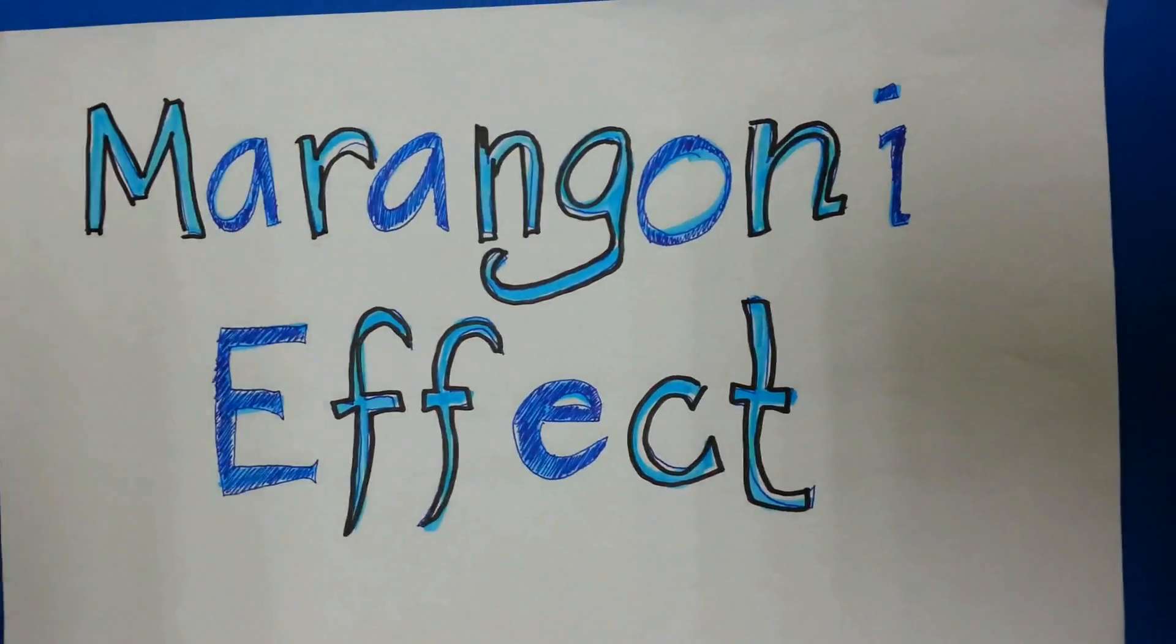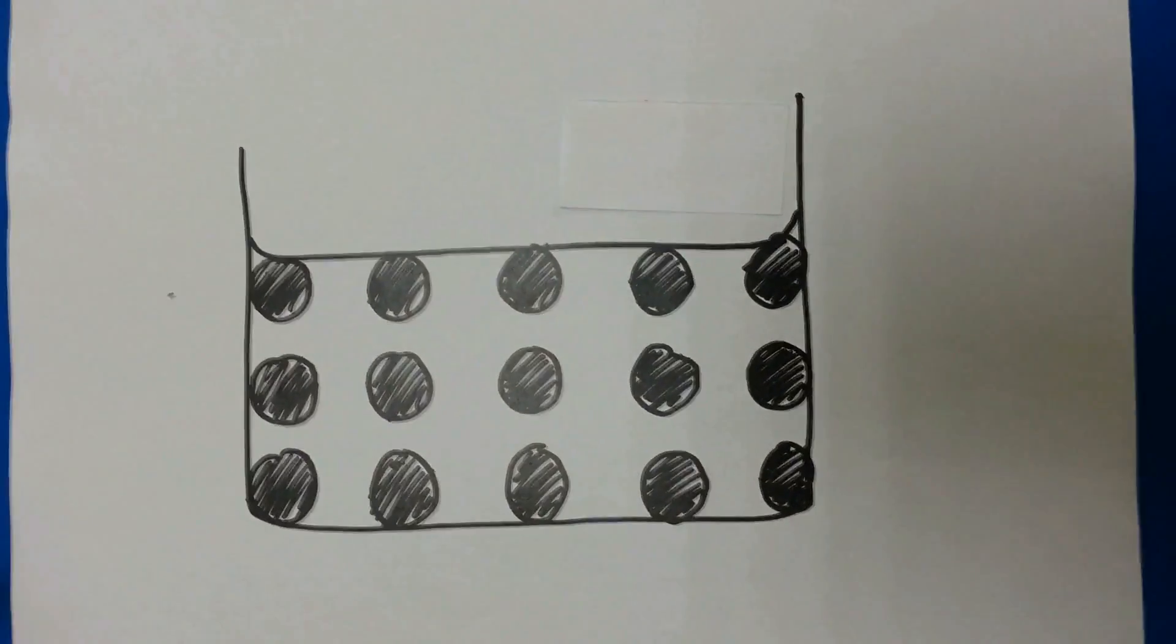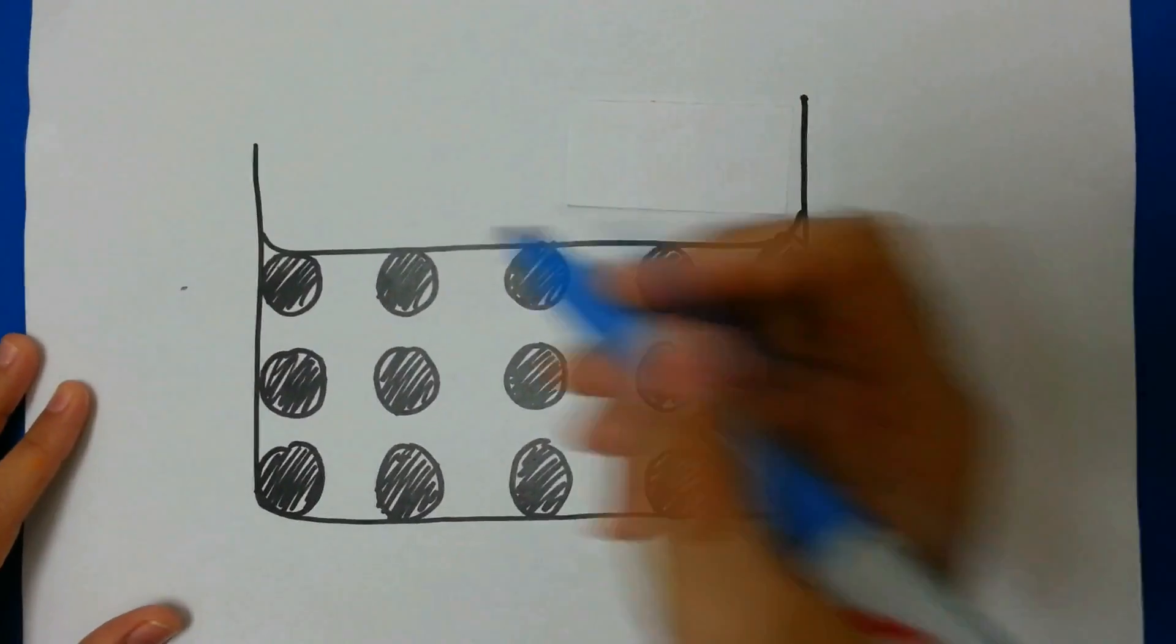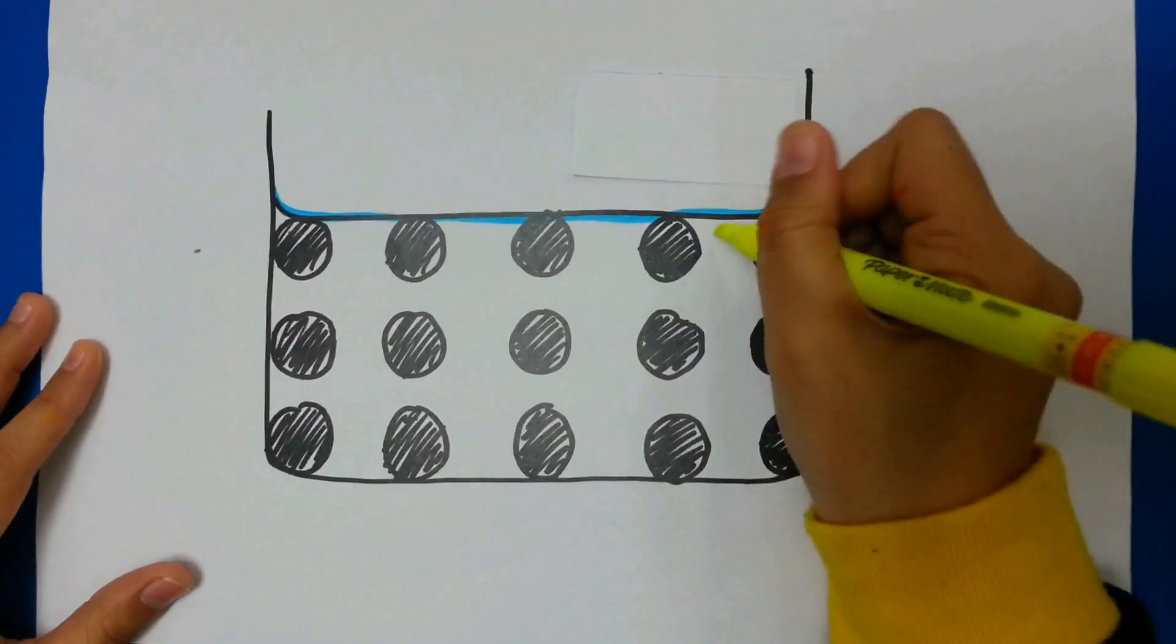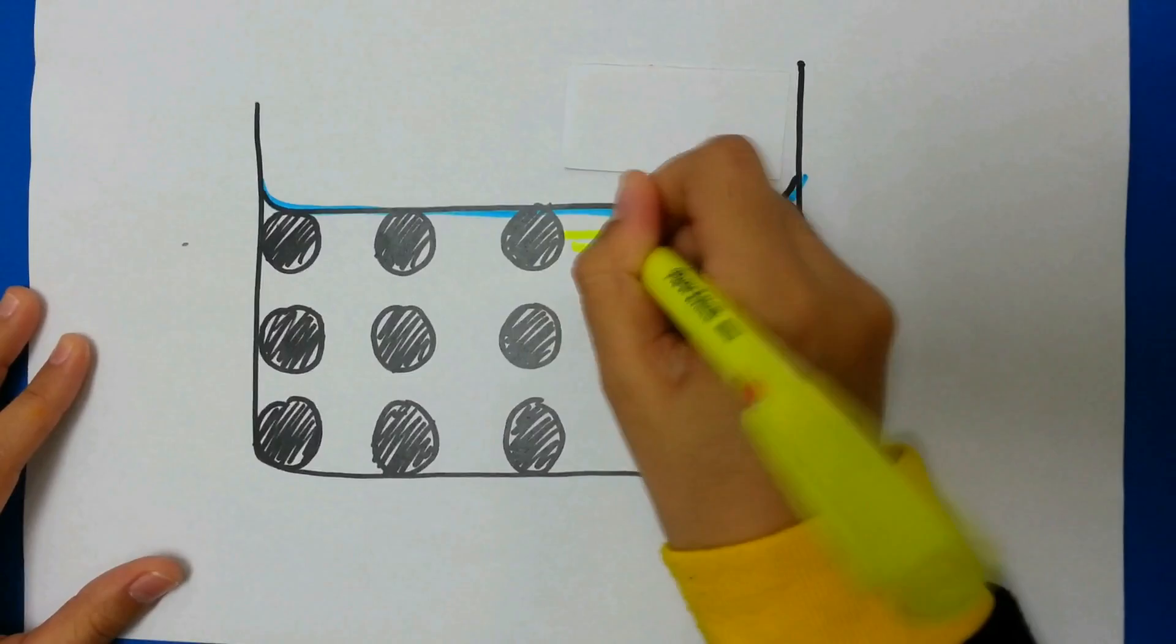The experiment shown is caused by the Meringoni effect, which acts on the surface of the liquid. Molecules at the surface of the liquid form stronger bonds.